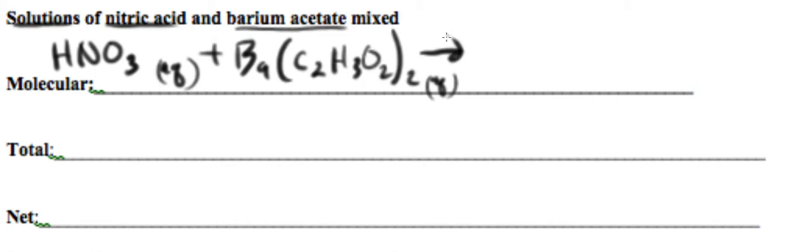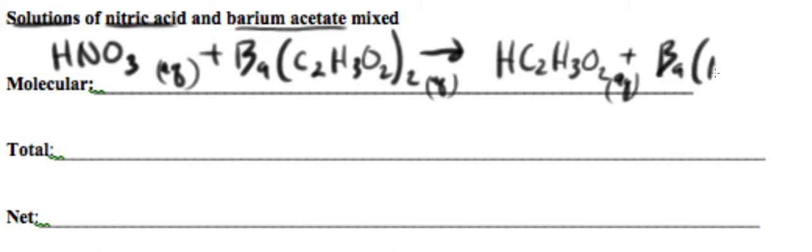That's going to produce acetic acid, which is the important part of this reaction, and barium nitrate, which is a soluble salt. Now we have to balance this. We have two acetates, so we're going to need a two in front of acetic acid. Now that we have two hydrogens, we're going to need a two in front of nitric acid.